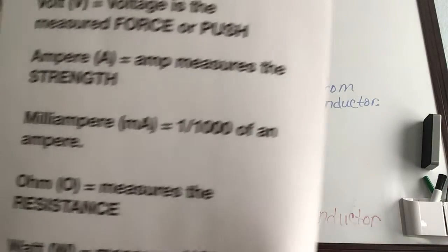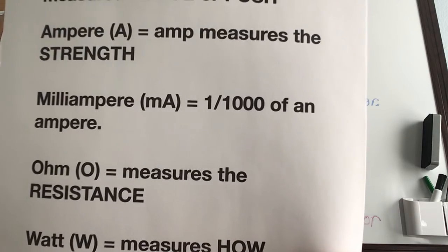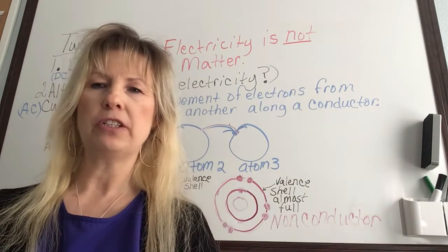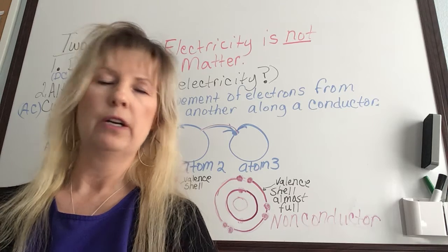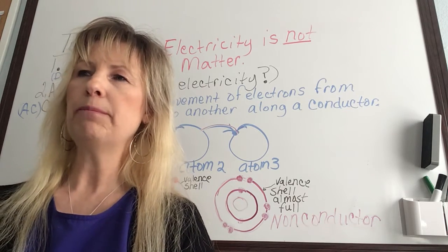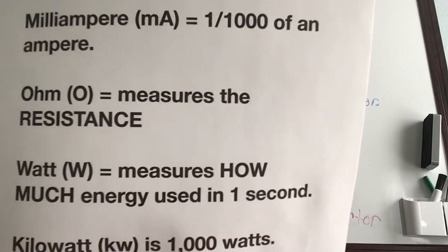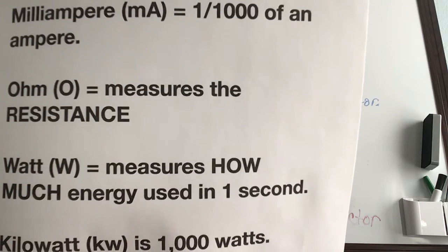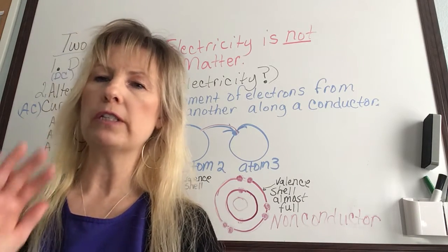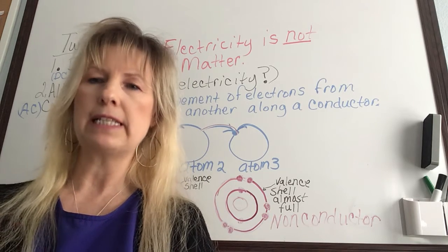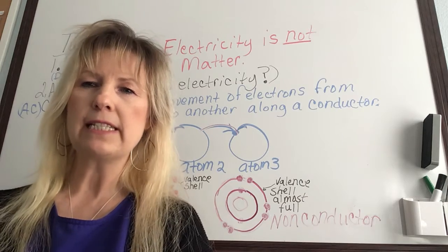Milliampere, abbreviated MA, is 1/1000 of an ampere. It's the current we use in facial and scalp treatments — an ampere current would be way too strong and would damage the skin or the body. An ohm, abbreviated O, is a unit that measures the resistance of electric current. Current will not flow through a conductor unless you have force — volts — stronger than the resistance, the ohms.